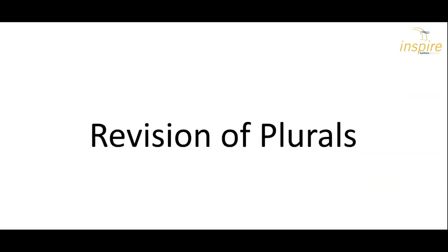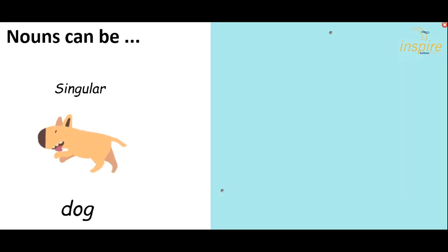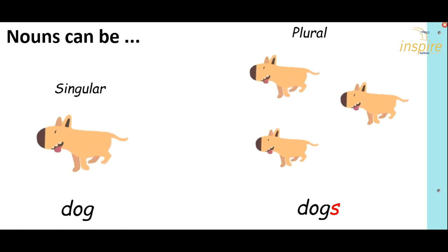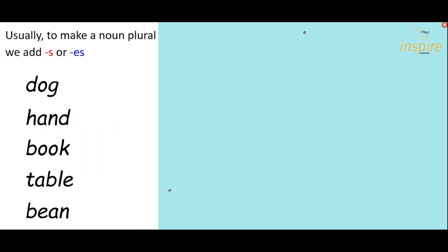Welcome back. Today's lesson is the revision of spellings for plurals. Nouns can be singular — if there is only one, we have one dog. Or they can be plural — if there's more than one, we have dogs. Usually to make a noun plural, we add S or ES. So in these words we add S: dogs, hands, books, tables, beans.